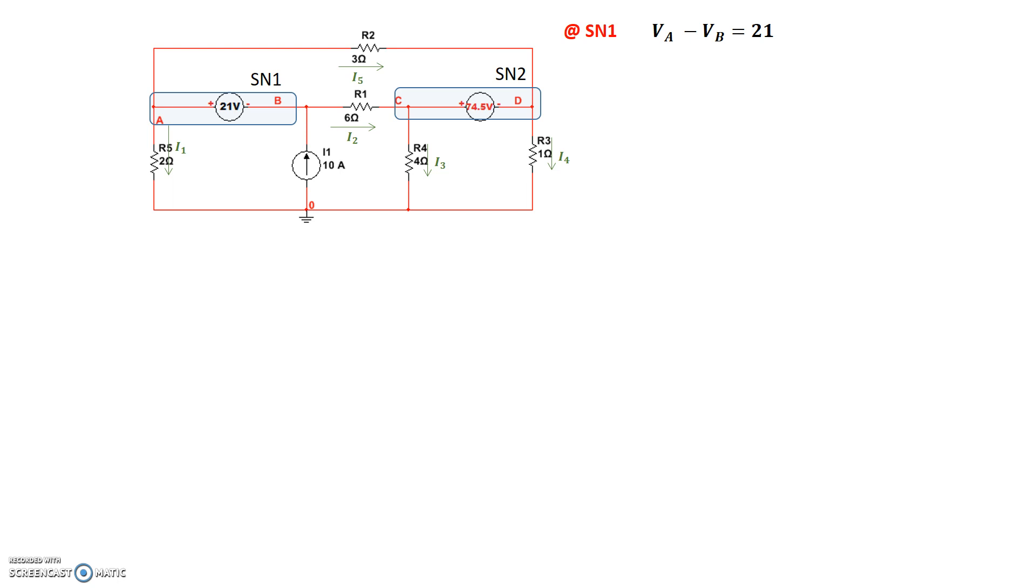Let's move on to supernode 2. At supernode 2, again, the plus sign of the 74.5-volt source is towards C node, and the negative sign is towards D node. So, again, we look at this and see that the voltage at node C, which is on the plus side, minus the voltage at node D, which is on the minus side, should be equal to 74.5 volts. So, at supernode 2, we can simply write this expression of VC minus VD equals 74.5.